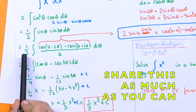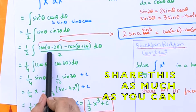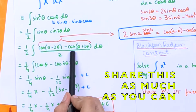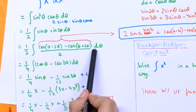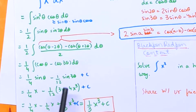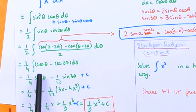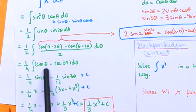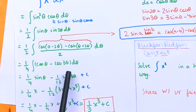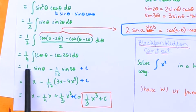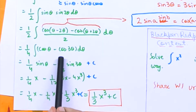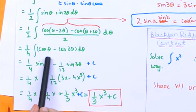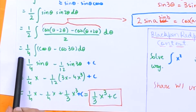So we get one half times cos(theta minus 2 theta) minus cos(theta plus 2 theta), all over 2. Because cos is an even function, cos of minus theta equals cos of theta. So we can write this as cos theta minus cos 3 theta, and we take the 2 in the denominator outside.